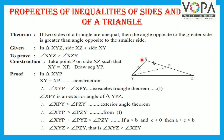Proof: In triangle XYZ, XY is congruent to XP by construction. Therefore, angles opposite to them are equal: angle XYP is equal to angle XPY, by the isosceles triangle theorem — statement 1. Now, angle XPY is an exterior angle of triangle YPZ. Therefore, angle XPY is greater than angle PZY, which is the remote interior angle, by the exterior angle theorem. Therefore, angle XYP is greater than angle PZY, from statement 1.